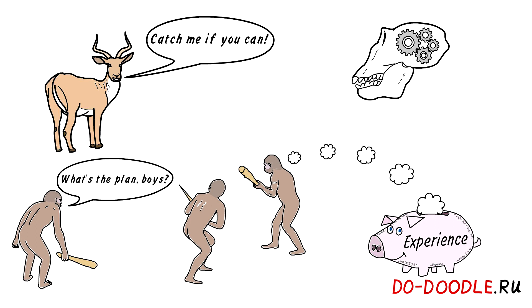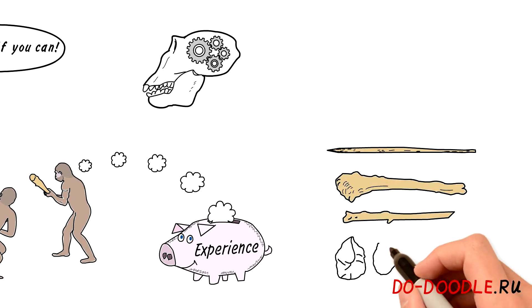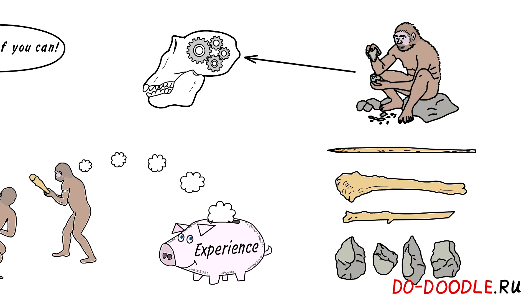Since our ancestors were mainly vegetarians, they had no sizeable claws or fangs, so it was imperative to start using wooden sticks and stone tools. So you have to learn how, and that's where the complex brain is required.